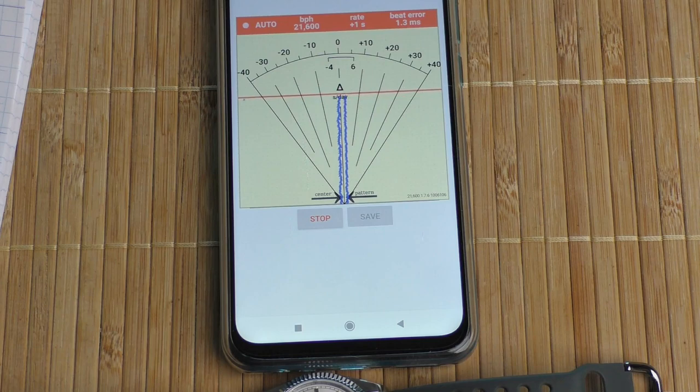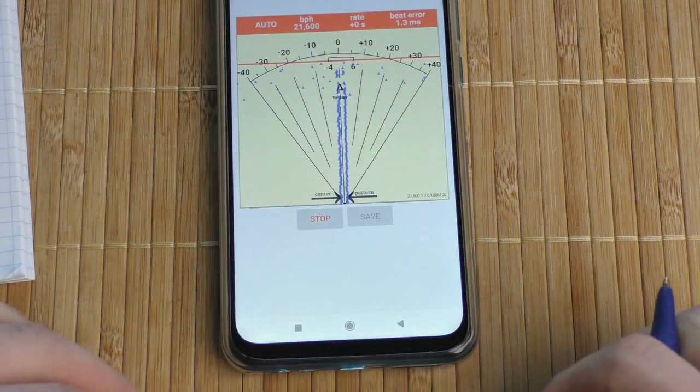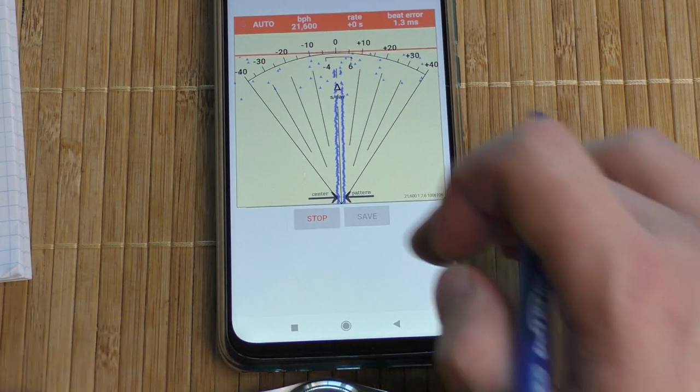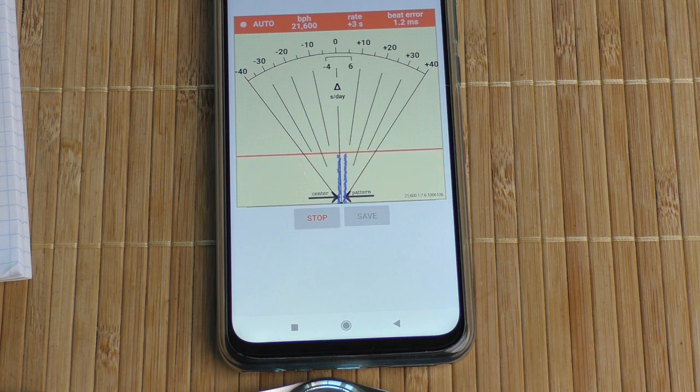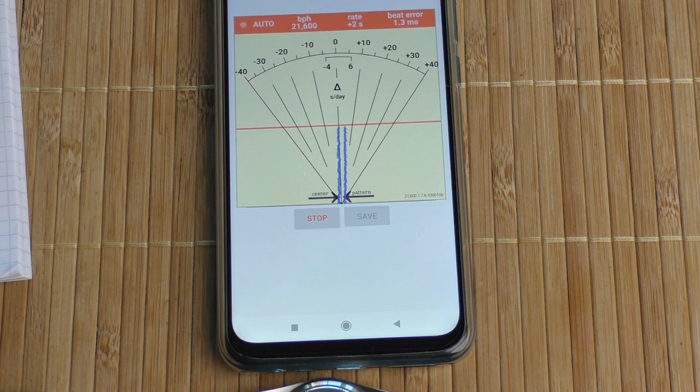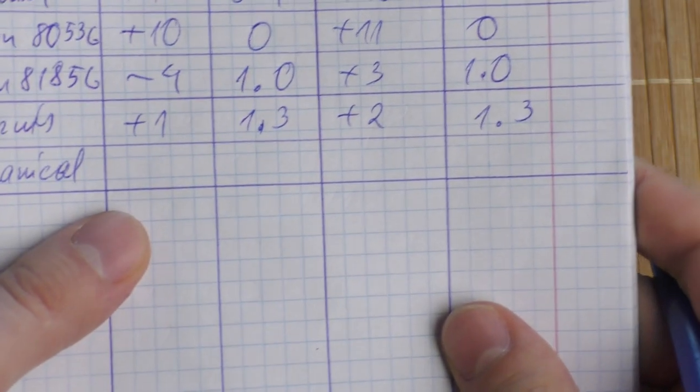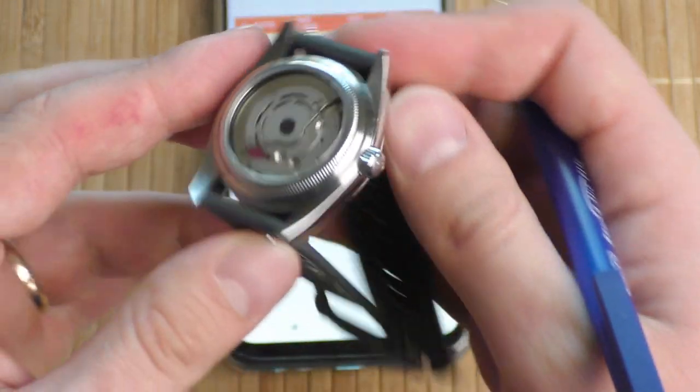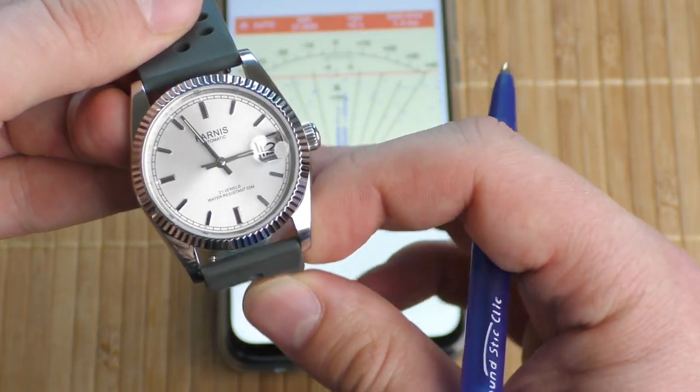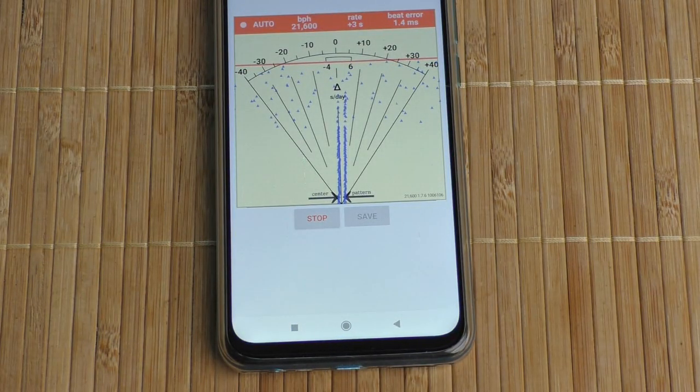Okay, plus 1 second and 1.3 milliseconds beat error. Let's flip it upside down. Let's see if anything's gonna change. Plus 2 seconds and 1.3 milliseconds of beat error. I'm kind of proud of myself. Did a good job on this one. I don't know for how long it's gonna run this nice, although I might need to adjust it once again. I don't know.